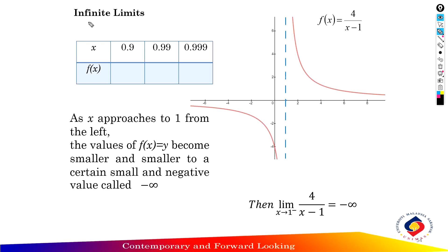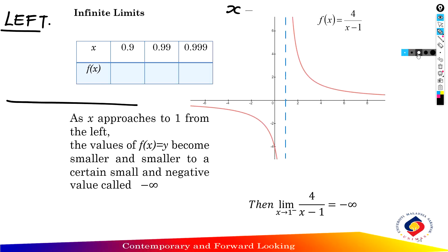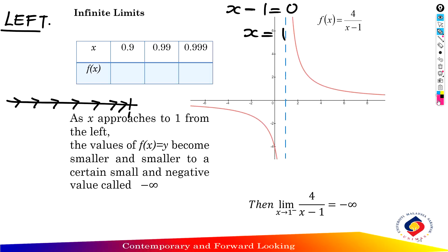Now we find the infinite limit of the function from the left. We draw the number line and set the denominator x minus 1 equal to 0, so x = 1. From negative infinity to x = 1, we choose at least three values nearest to 1 from the left: the first value is 0.9, the second is 0.99, and the third is 0.999.